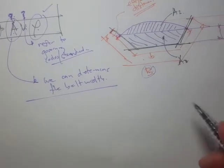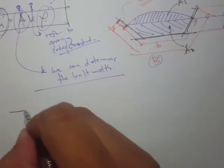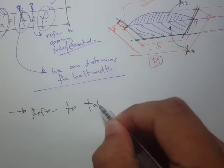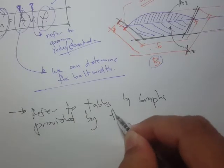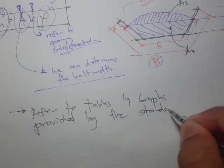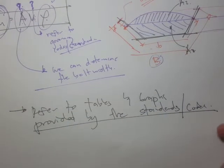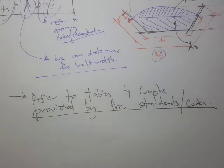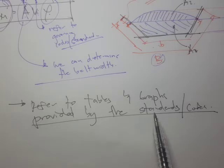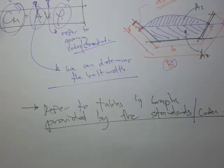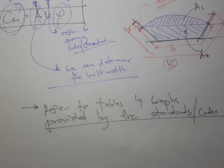That's why it makes sense to refer to symbols and graphs provided by the standards or codes. It is very practical to use tables or graphs available in the codes and standards rather than going through the equations, because after all the computations, we're actually computing a range — not an exact value. So we're still working within a range. That's the actual essence of design.